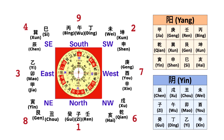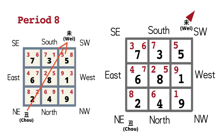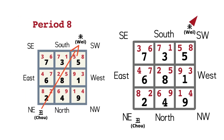So, number 5 starts in the middle, and then number 6, number 7, 8, 9, 1, 2, 3, and 4. Now we have created a flying star chart of a house that's sitting Chou and facing Wei in Period 8. It's exactly the same as the one on the left.